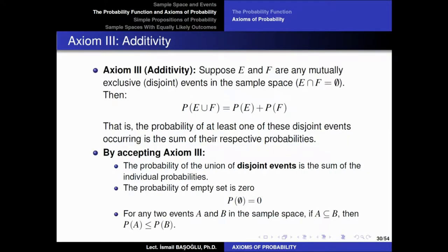The third axiom is a useful axiom for our calculations, and we are going to encounter it many times in future courses. Axiom 3 is the additivity axiom. In the same sample space, if we have two events E and F that are mutually exclusive or disjoint — meaning they do not have any common outcome and their intersection is the empty set — then the probability of their union can be calculated as the sum of the individual probabilities: the probability of E plus the probability of F. This is only true if the two events are disjoint, that is, they cannot occur at the same time. The probability of at least one of these disjoint events occurring is the sum of their respective probabilities.